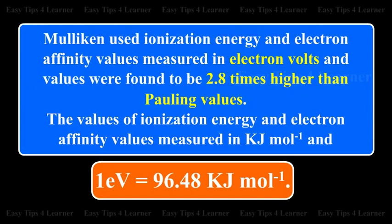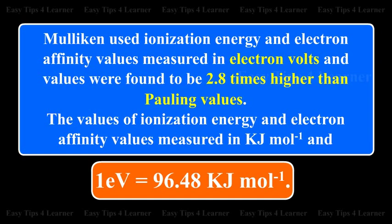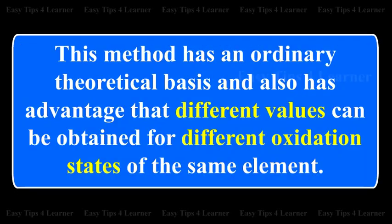Mulliken used ionization energy and electron affinity values measured in electron volts, and values were found to be 2.8 times higher than Pauling values. Since 1 electron volt is equal to 96.48 kJ per mole, the commonly accepted Pauling values are more nearly obtained by: Electronegativity = (Ionization energy + Electron affinity) / (2 × 2.8 × 96.48) = (Ionization energy + Electron affinity) / 540.